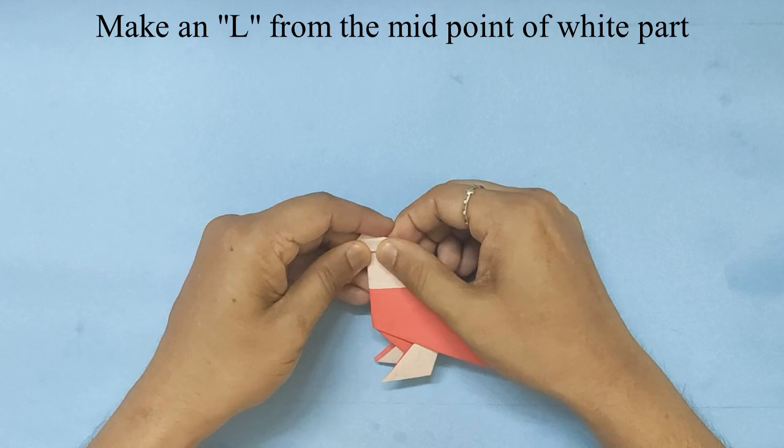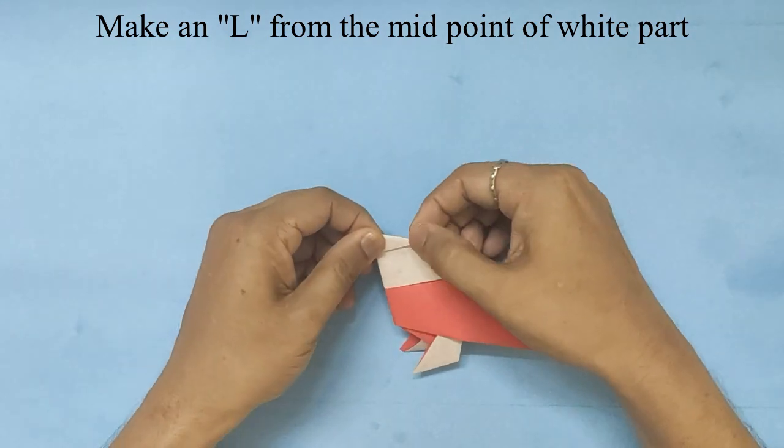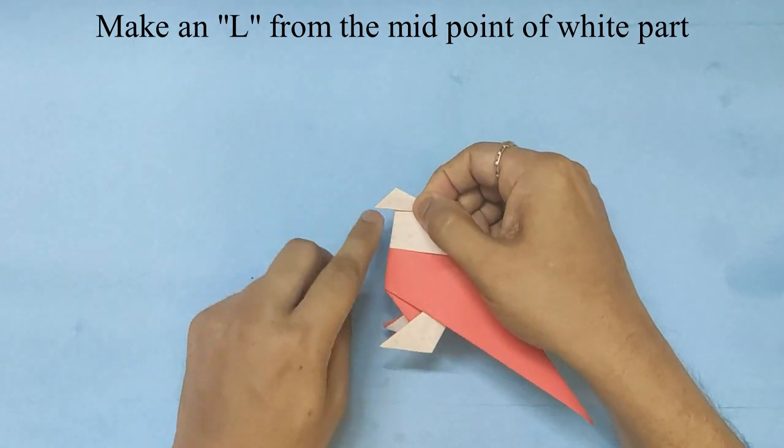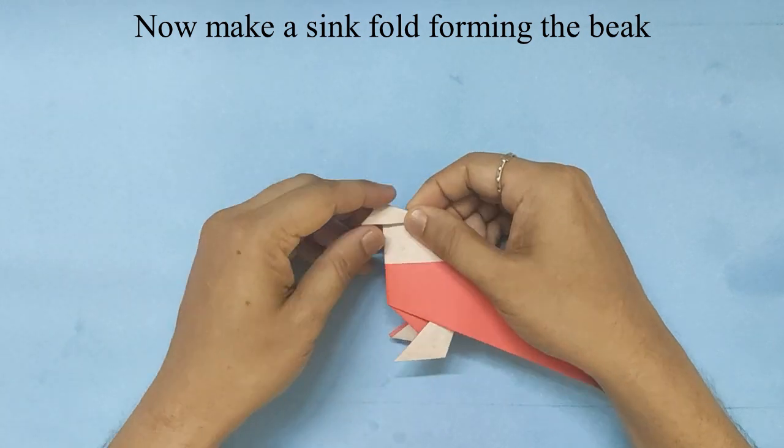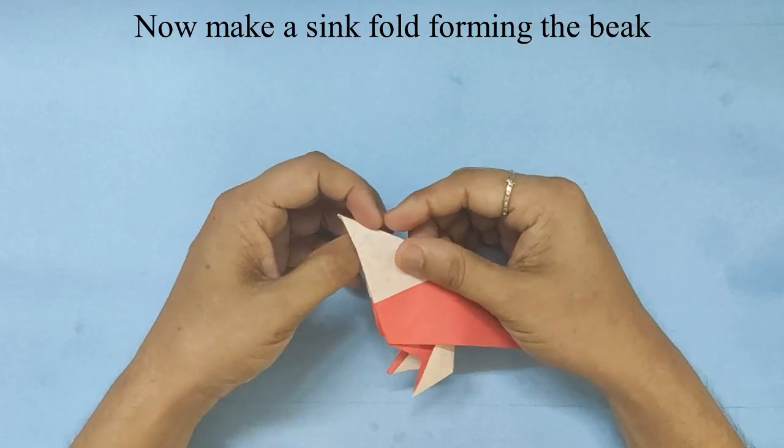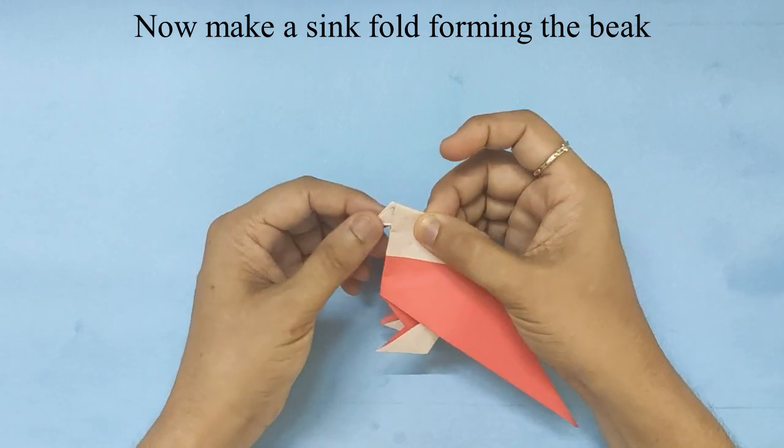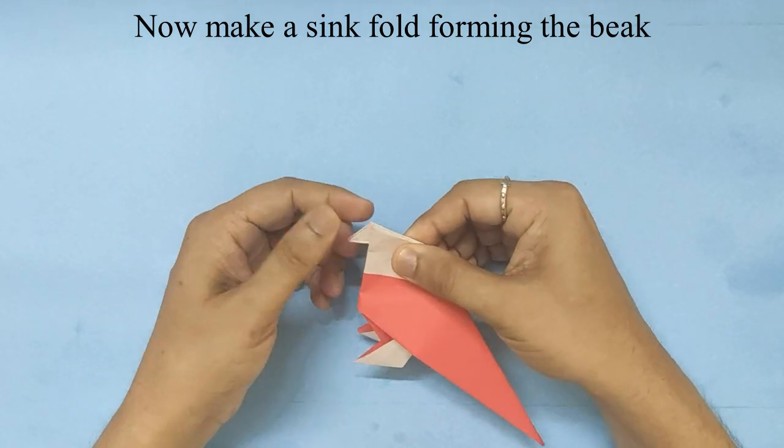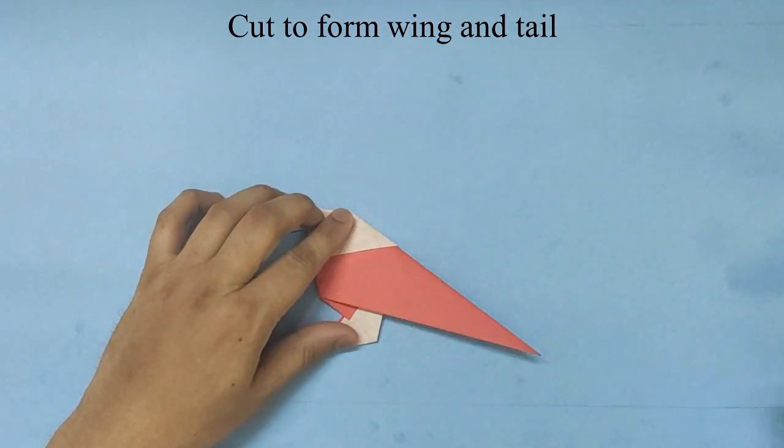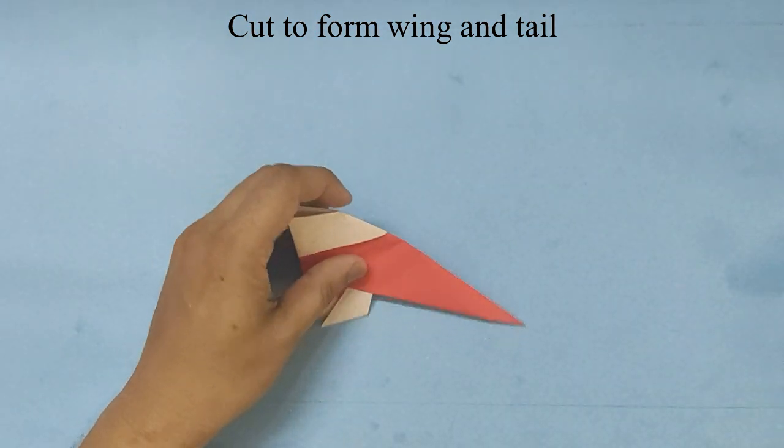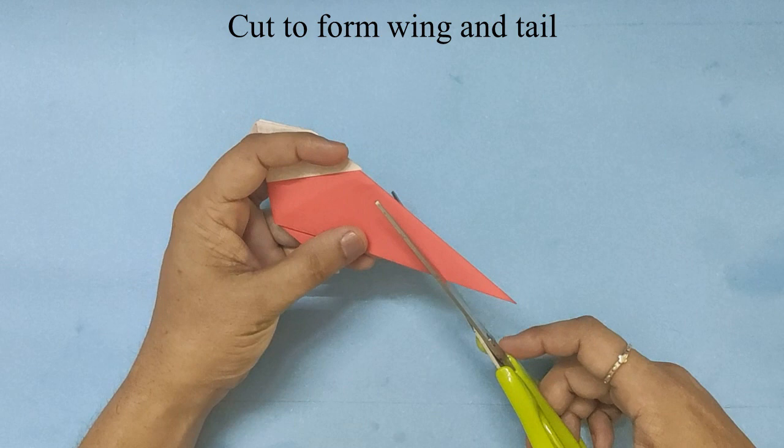You will now open it and make a sink fold. You will now cut the bird from the back at an angle.